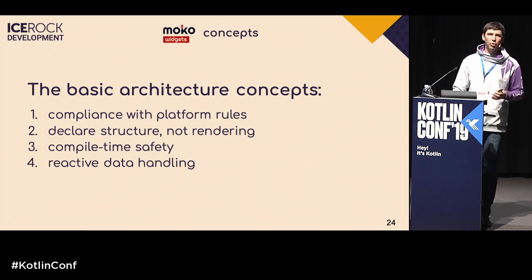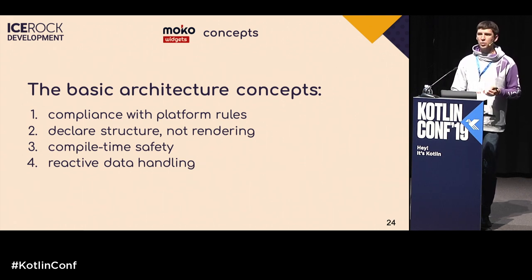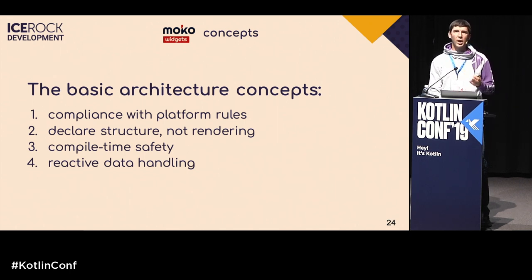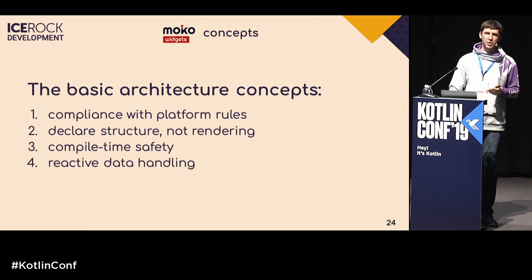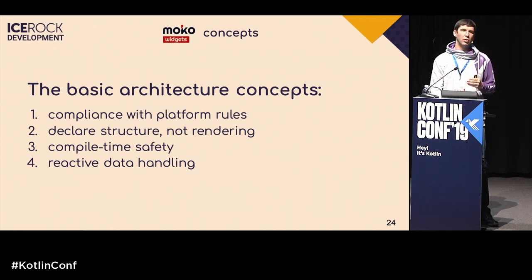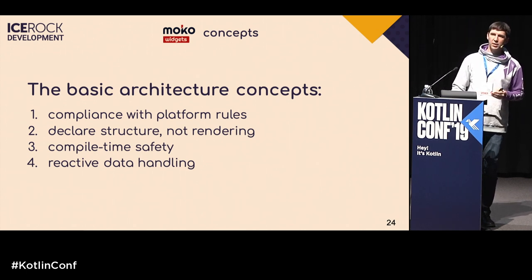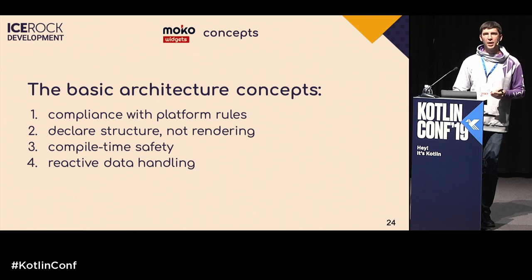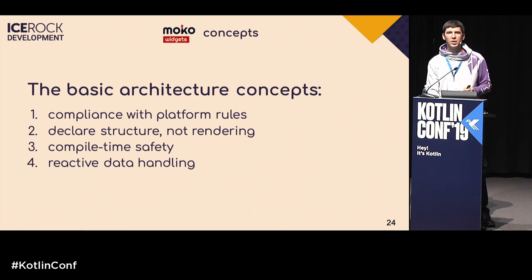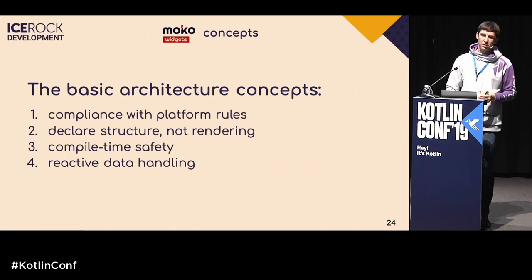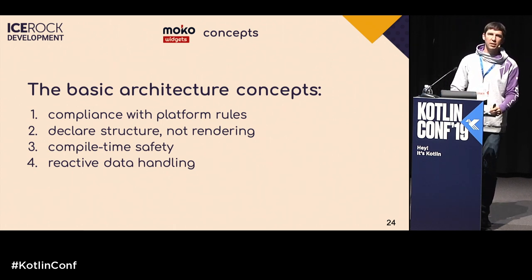We follow four main principles. First, comply with all platform rules. Second, because UI on the two platforms is slightly different, we should only declare the structure of the screen, not the rendering. Third, we want to create a fail-proof API — the best solution is when the compiler catches errors at compile time, not at runtime. Fourth, about data management: we want to use a reactive approach throughout.